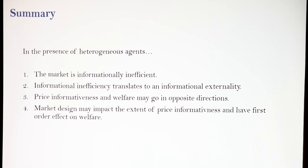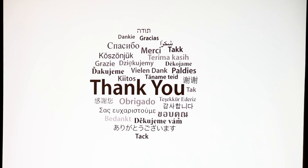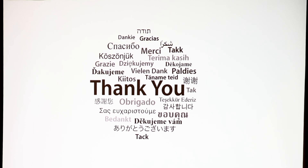To summarize: when we introduce heterogeneity in preferences, not necessarily in information quality, we get uninformative prices, which leads to an informational externality. We have shown how market design can impact welfare with respect to the heterogeneity in each of these markets. Thank you.